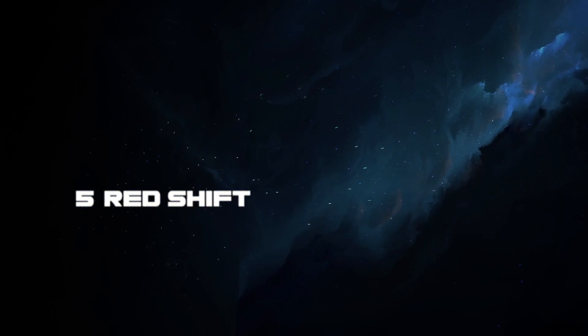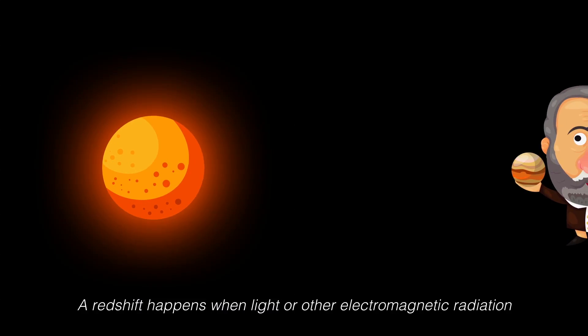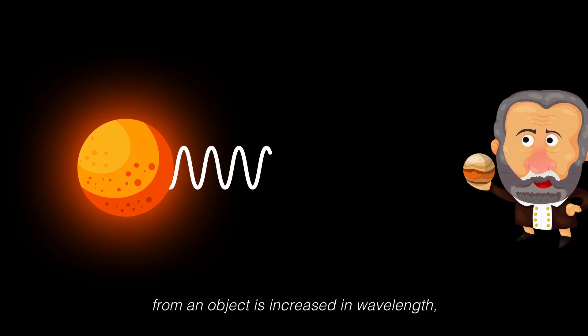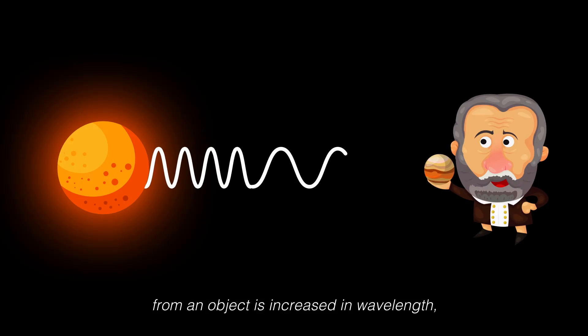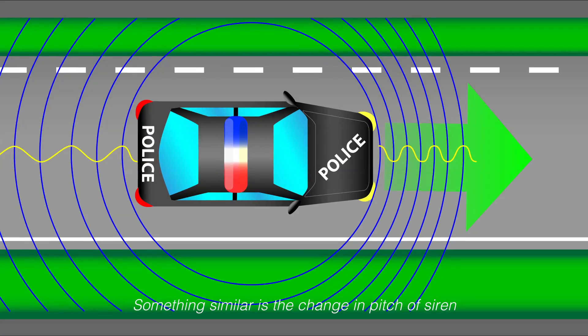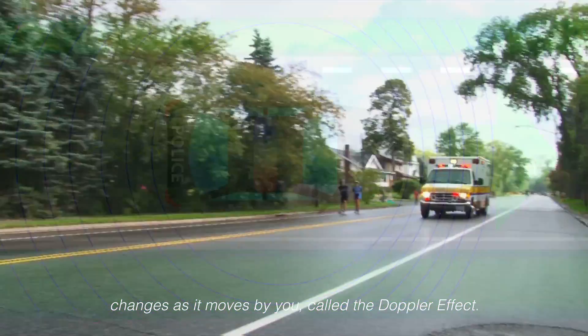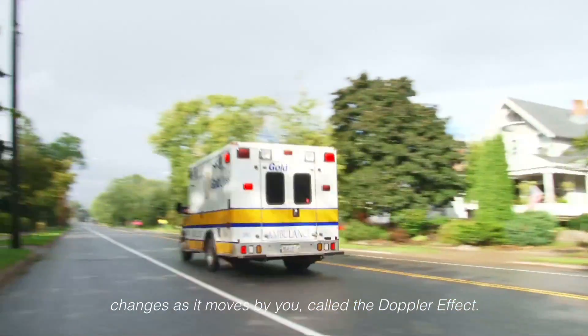Number 5: Redshift. A redshift happens when light or other electromagnetic radiation from an object is increased in wavelength, or when a light source moves away from an observer. Something similar is the change in pitch of a siren as it moves by you, called the Doppler effect.